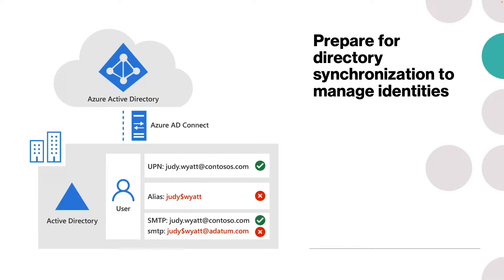Planning requirements and functionality include determining the required permissions, planning for multi-forest directory scenarios, capacity planning, and two-way synchronization. To help ensure a smooth transition to Microsoft 365 using synchronization, it is highly recommended that organizations prepare their Active Directory forest first before beginning their Microsoft 365 directory synchronization deployment.